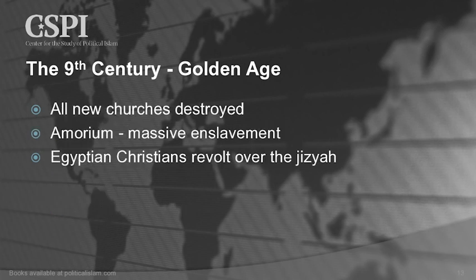There was an order from the Caliph, the ruler of Islam, to destroy all new churches. At Amorium, there was massive enslavement of Greeks. The Egyptian Christians revolted over the Jizya — the Copts, these are the Coptic Christians who are suffering today, and this is the beginning of their suffering. The Jizya was the tax on the dhimmi.